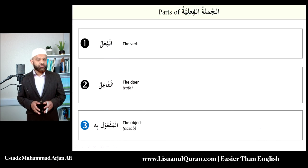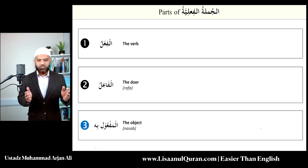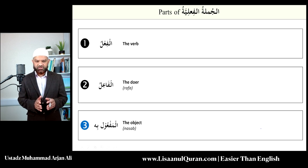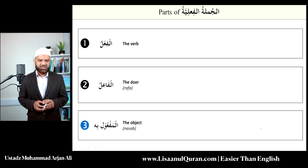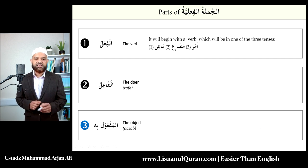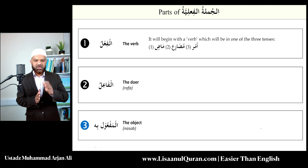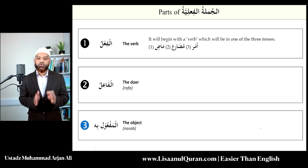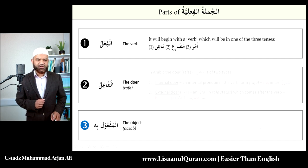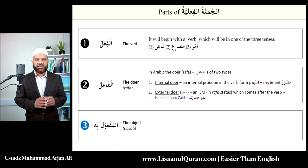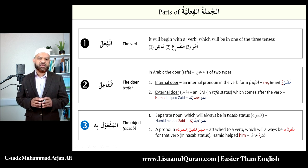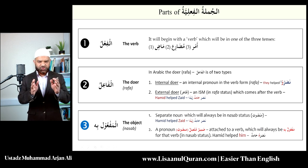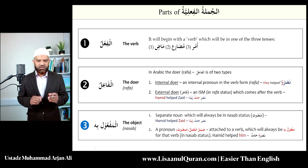The verb in Arabic has three tenses: it can be a completed task — madi; or mudar'i; or amr. We will go through that in detail. The doer of the verb can be a pronoun or a noun. The maf'ul bihi, the object, can also be a noun or a pronoun. We will look at both in detail — how to recognize and translate them. But for now, this gives you the three main components of the verbal sentence.